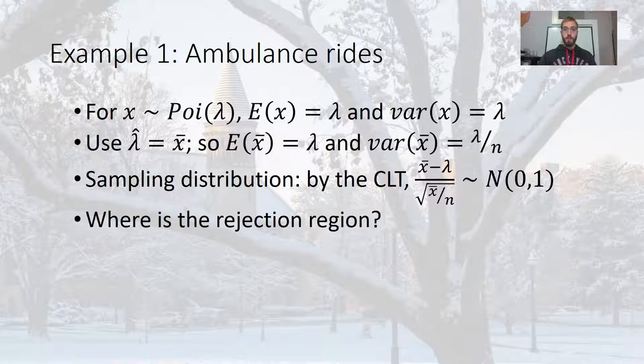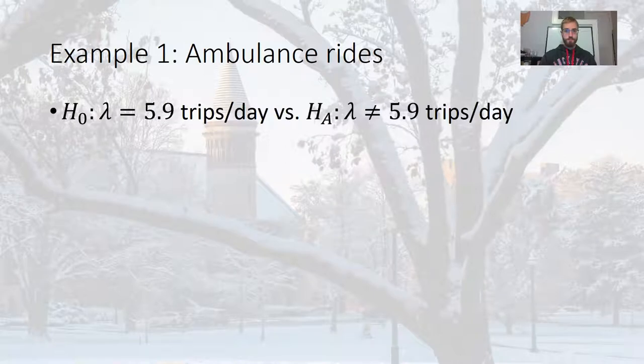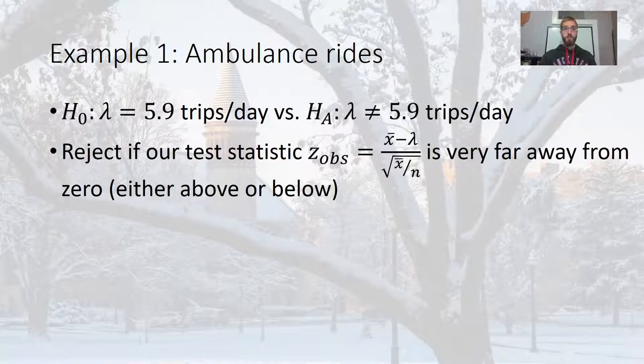So the question then is, where's the rejection region? Remember, my alternative hypothesis is that lambda does not equal 5.9. So where's the rejection region in this case? Here's my hypothesis again. And so we reject if our observed Z statistic, and it's a Z because I have a normal for my sampling distribution, is very far away from zero. Because that would mean that we have evidence that the ambulance rides per day has either increased or decreased, either above or below. So let's draw a picture of this real quick.